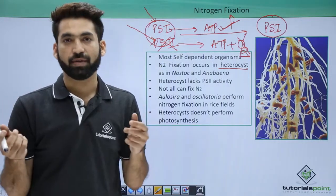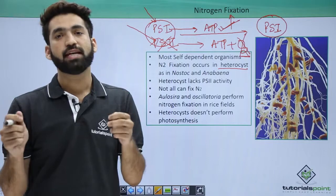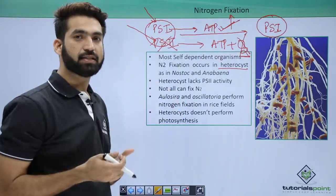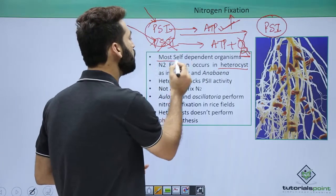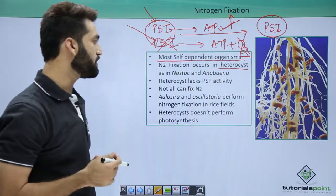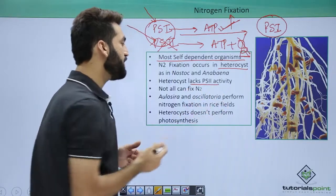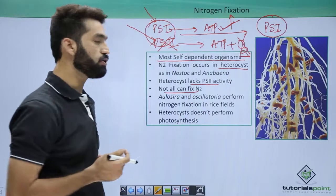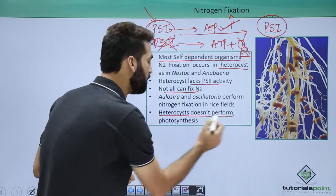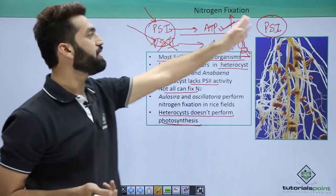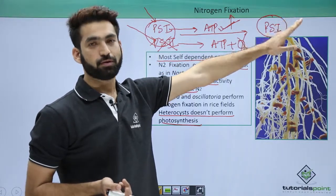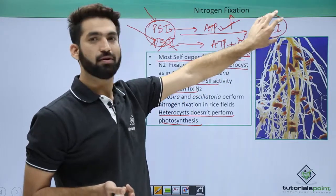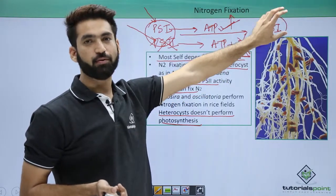Some cyanobacteria perform nitrogen fixation by forming heterocysts, while all cyanobacteria are photosynthetic. Cyanobacteria are thus more self-dependent organisms. Heterocysts lack PS2 activity and do not perform photosynthesis, because for photosynthesis you require both PS1 and PS2, and without PS2 normal photosynthesis cannot occur.